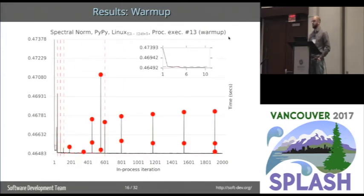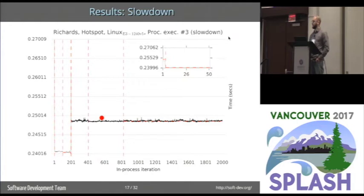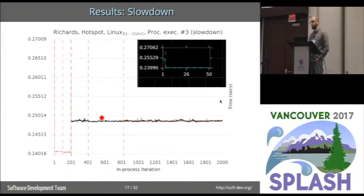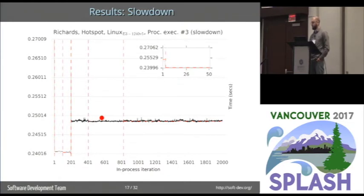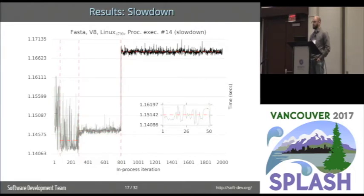Here's another example — this one warms up much quicker but has more outliers. Not all process executions behaved as we might expect. Here is an example of a benchmark slowing down — Richards running on Hotspot on a Linux machine. We see an initial warm-up, but then after 200 iterations, we slow down by about 10%. This is the polar opposite of what a just-in-time compiler should do. It's very worrying because this is the Richards benchmark — a very mature benchmark running on Hotspot, a very mature VM. This simply shouldn't happen. And here's another example: fasta running on V8 on a Linux machine — a very long warm-up phase, but then the steady state is actually slower than all of the warm-up phase. Again, it simply shouldn't happen.